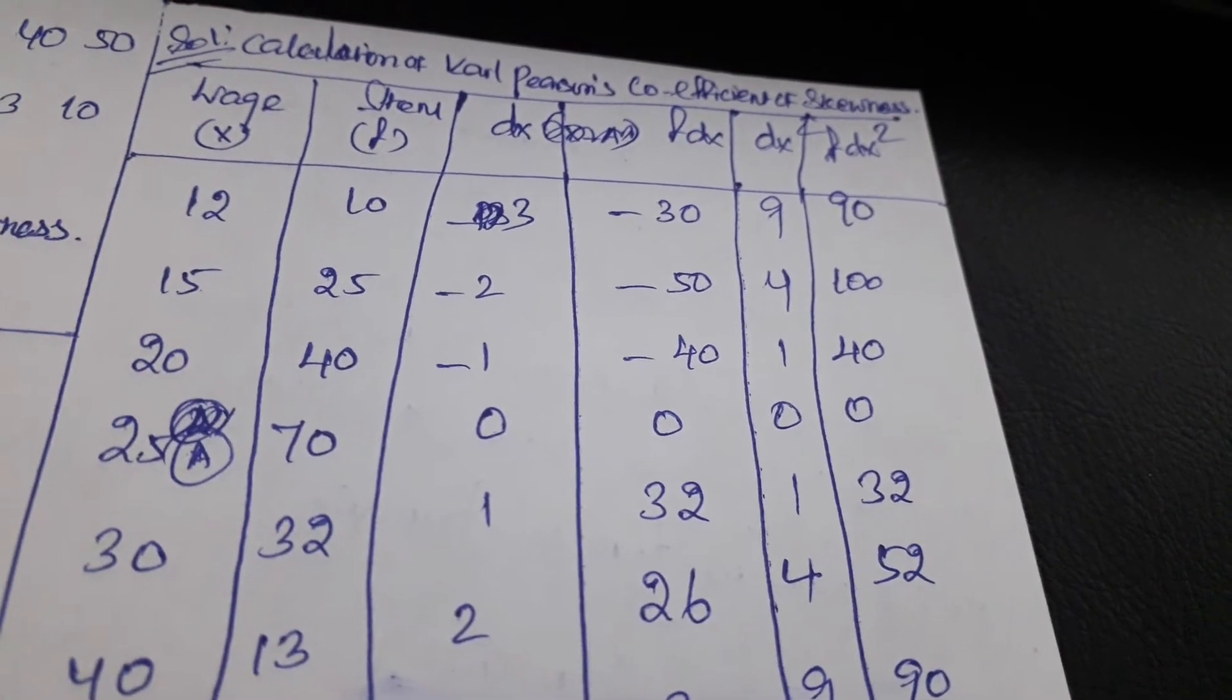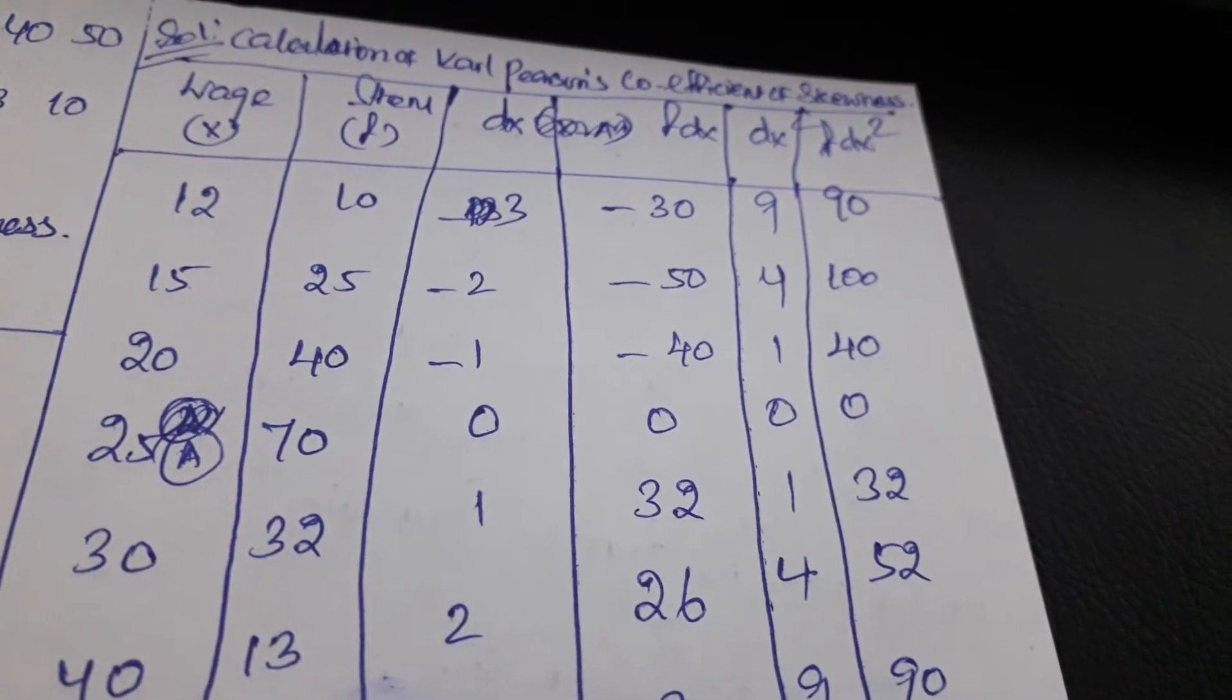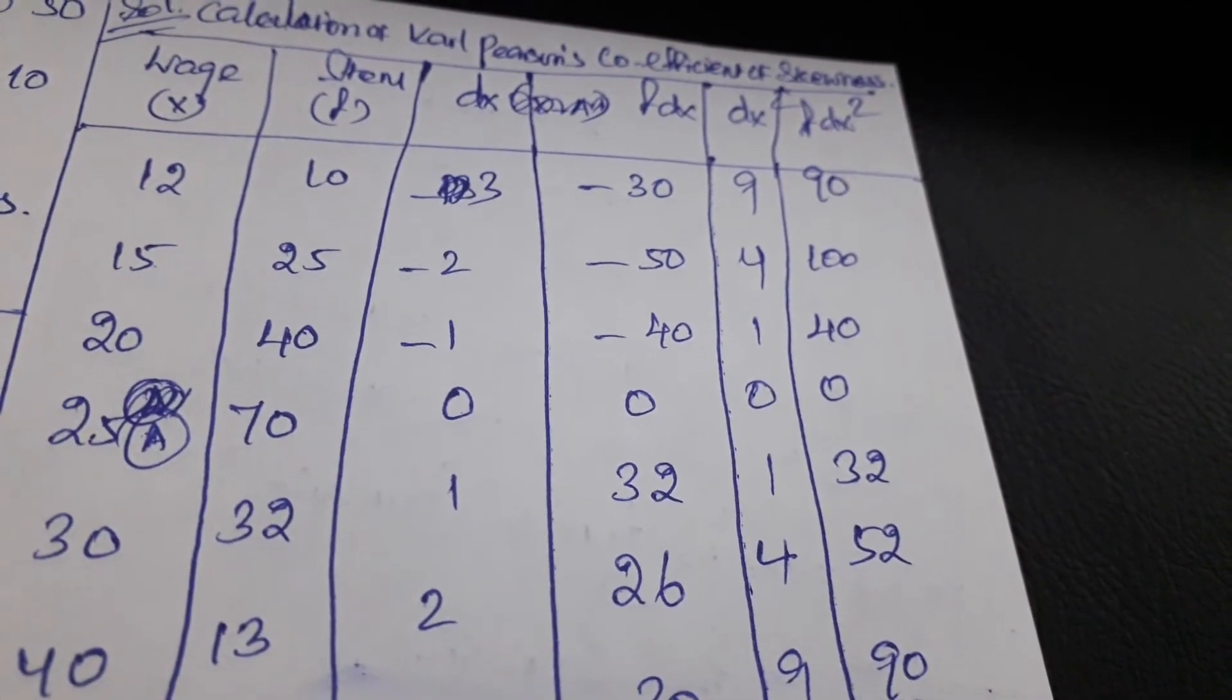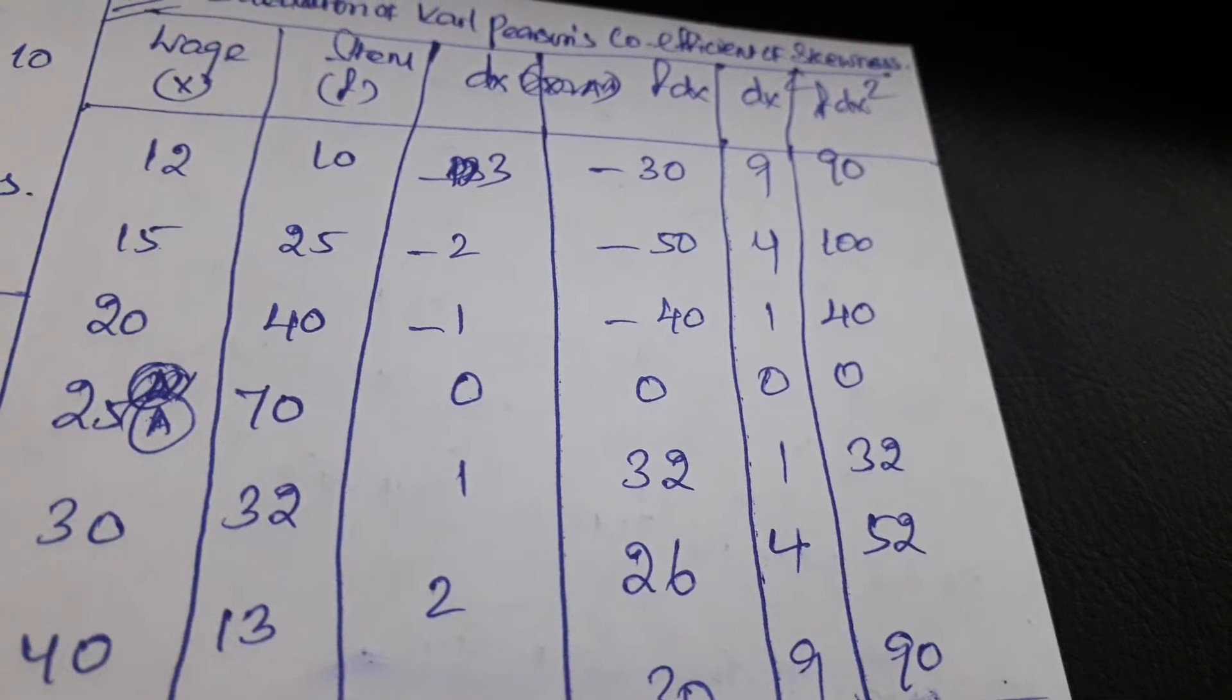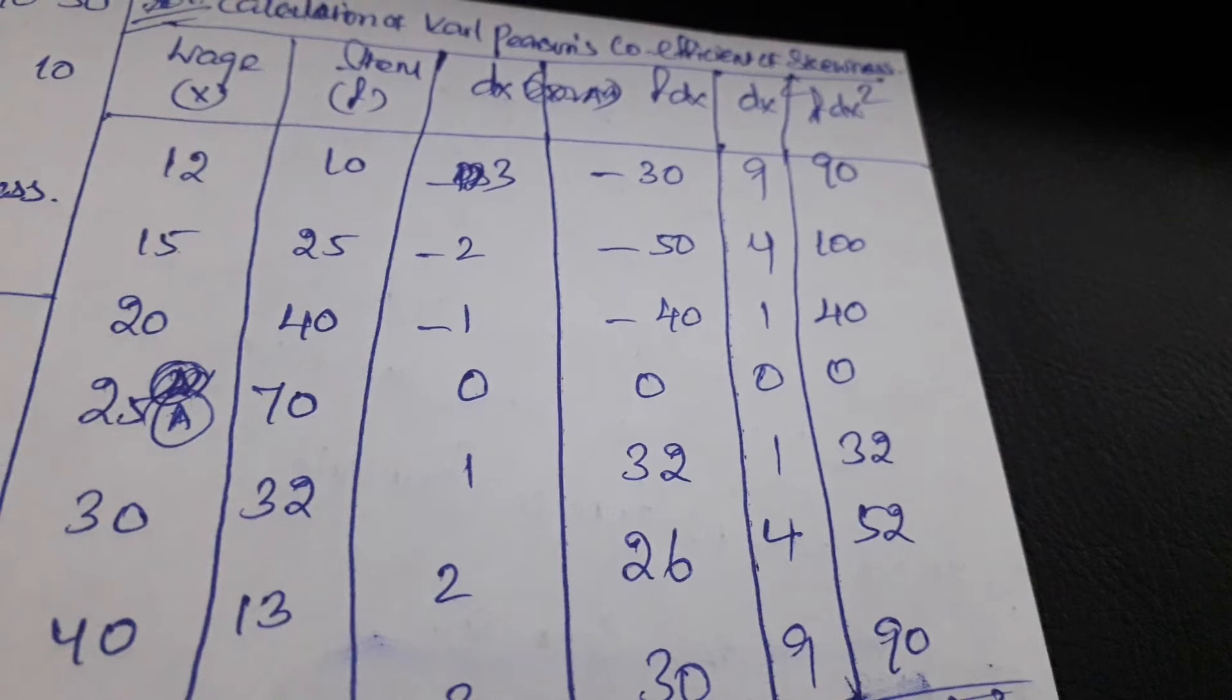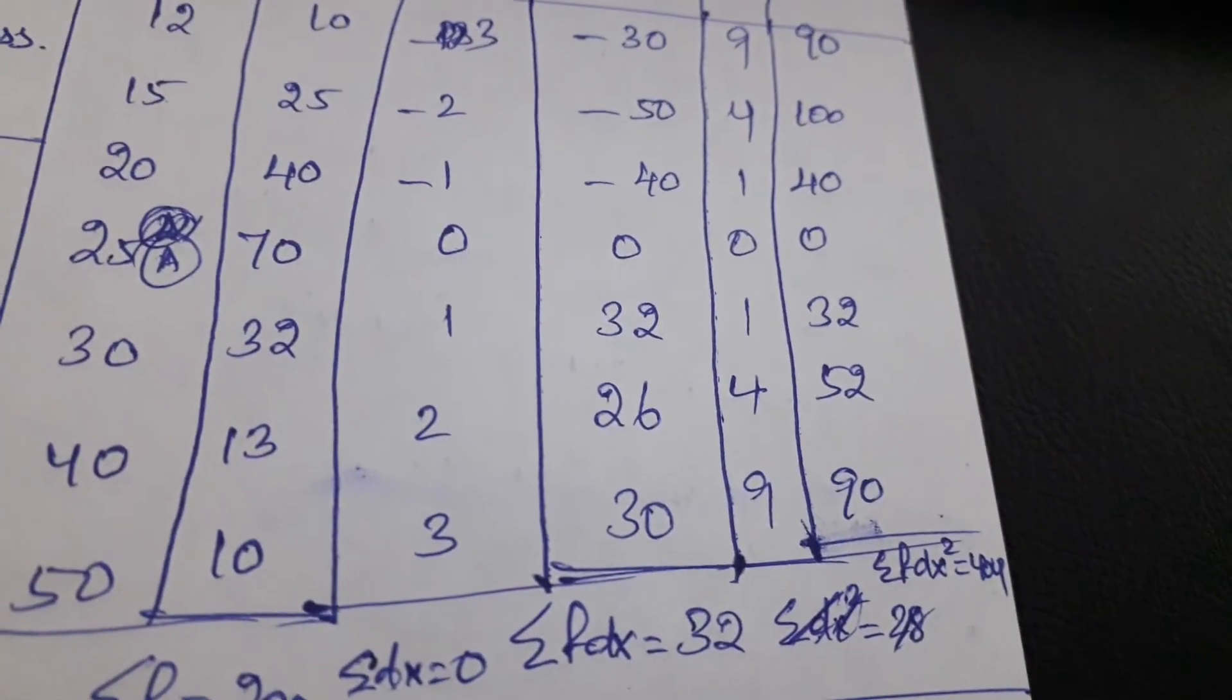We need to multiply the dx and f of dx, we can get f of dx squared. Or we have f of dx, just square it, we can get the f of dx squared.